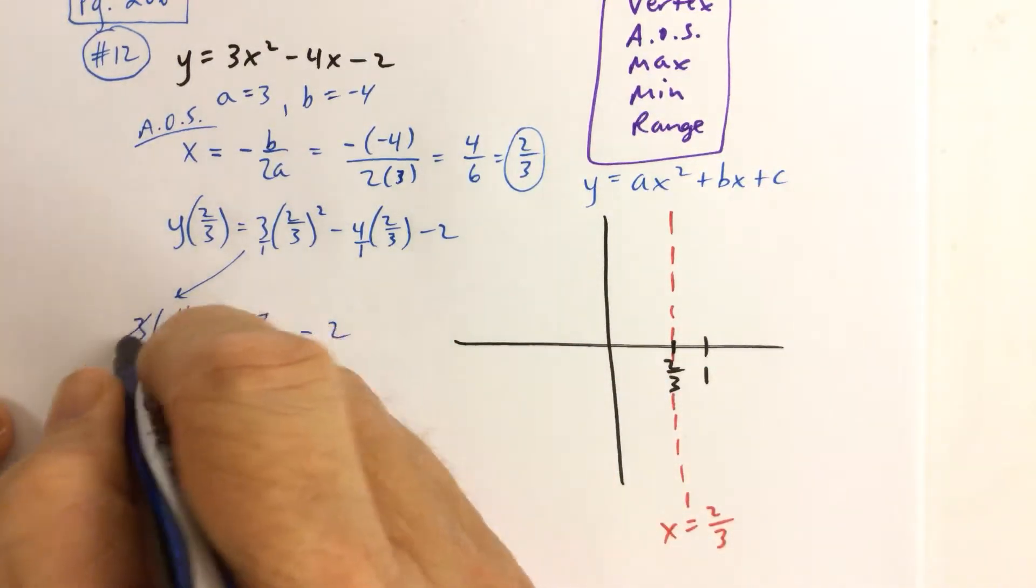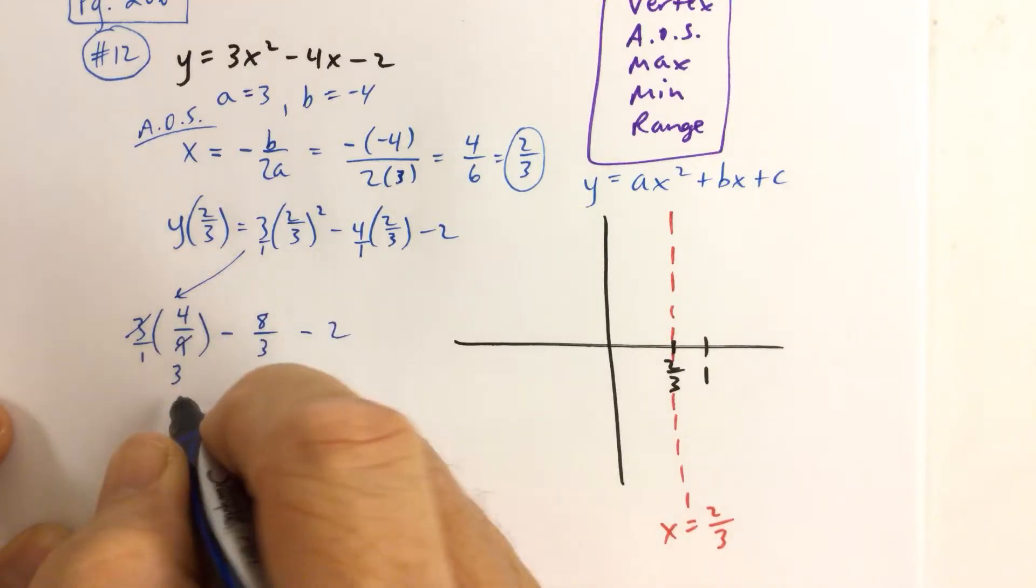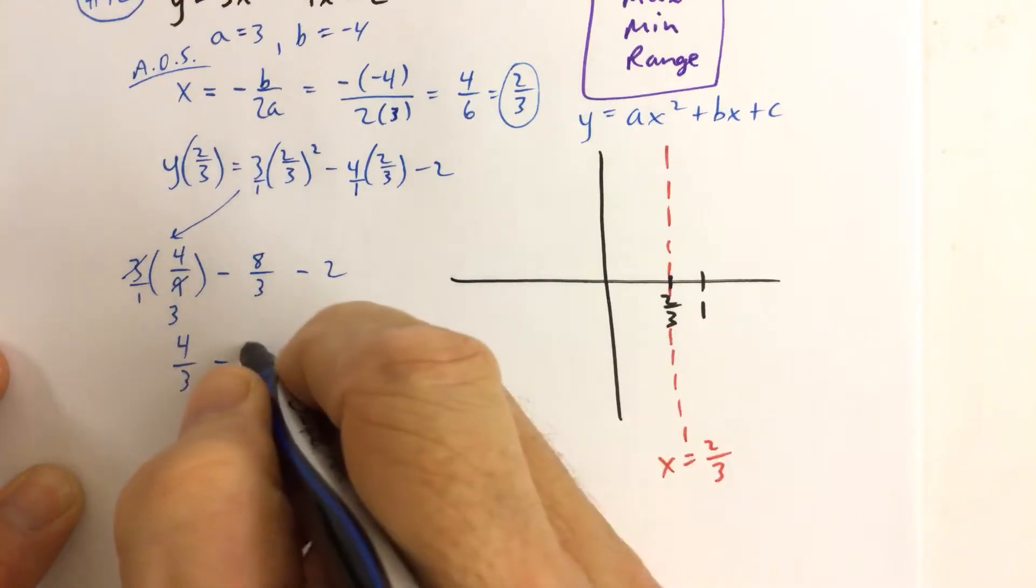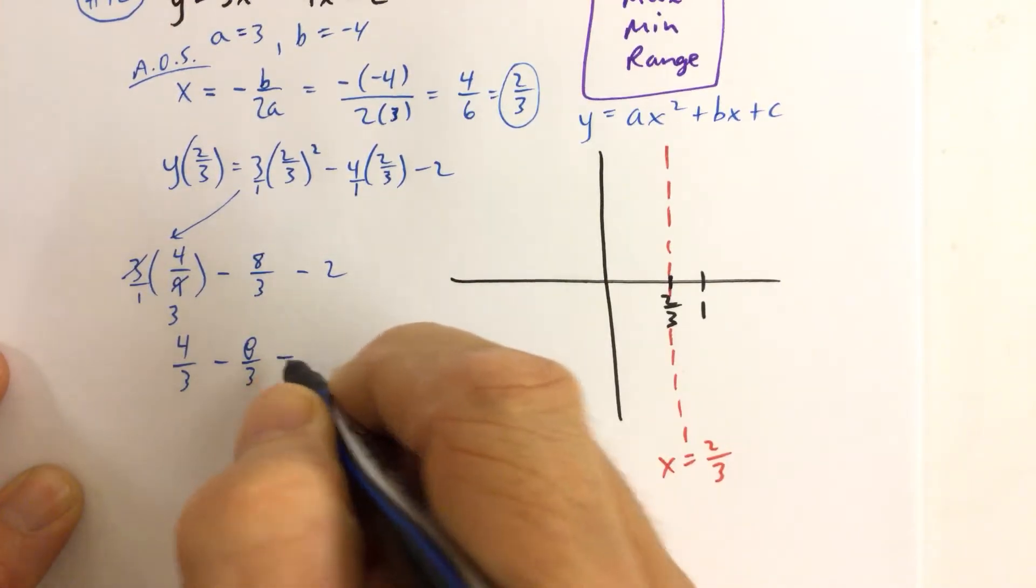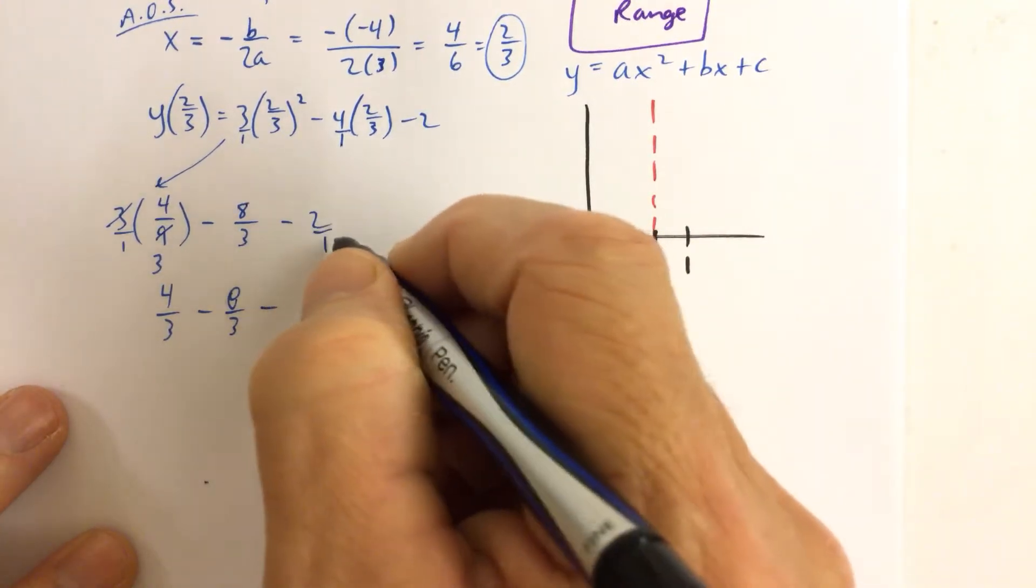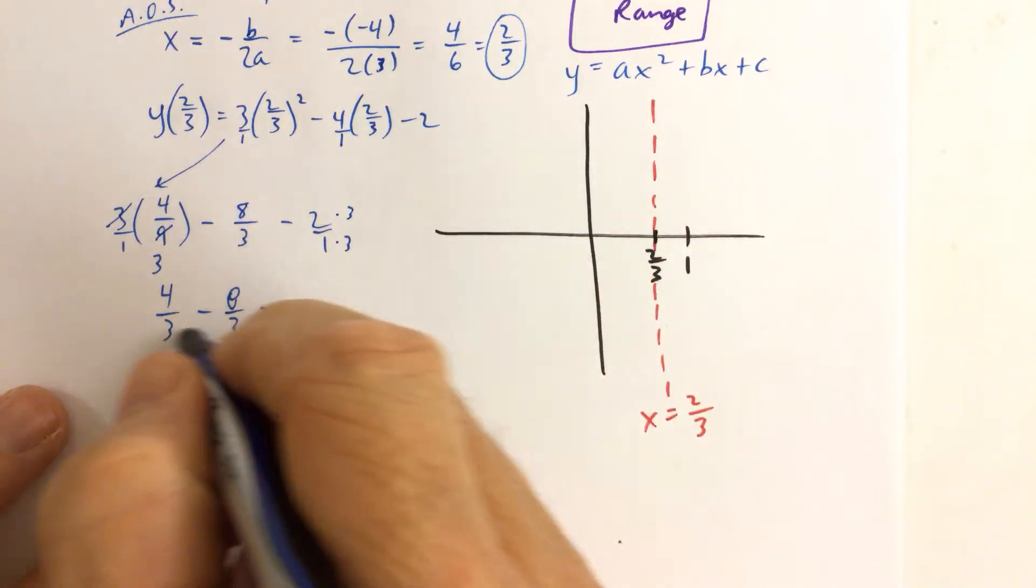4 times 2 is 8 thirds minus 2. Not too bad. 3 divides evenly into 9 three times, so we can write this first product as 4 thirds. 4 thirds minus 8 thirds. And then if we want to save ourselves a little bit of time here, we'll write 2 over 1 as...